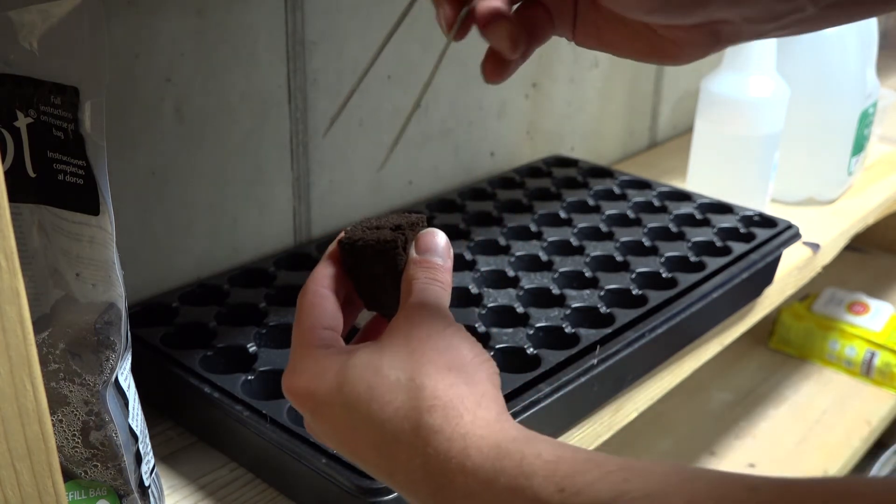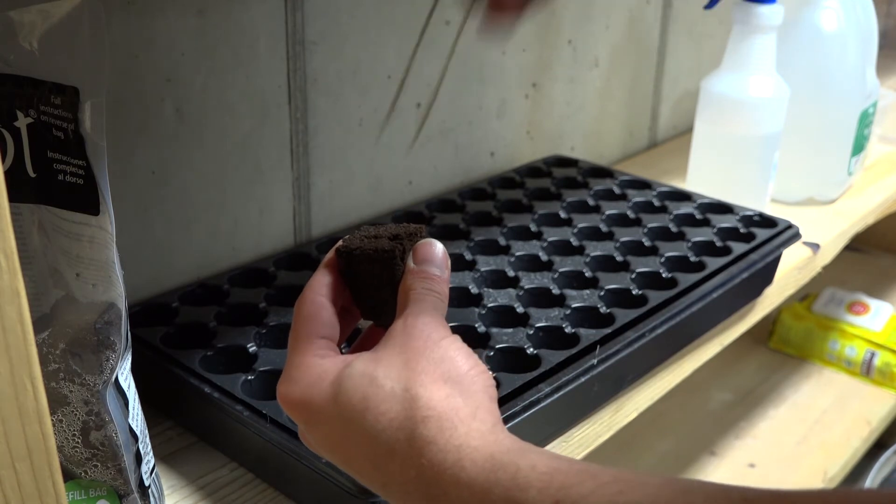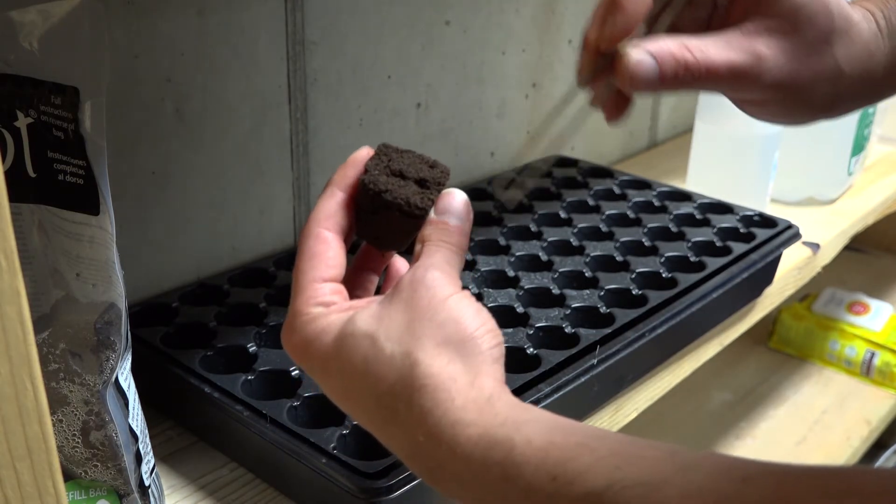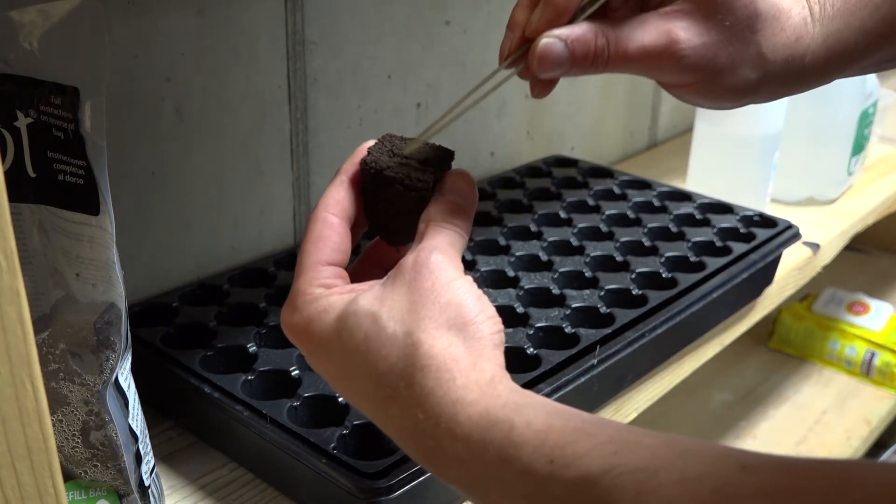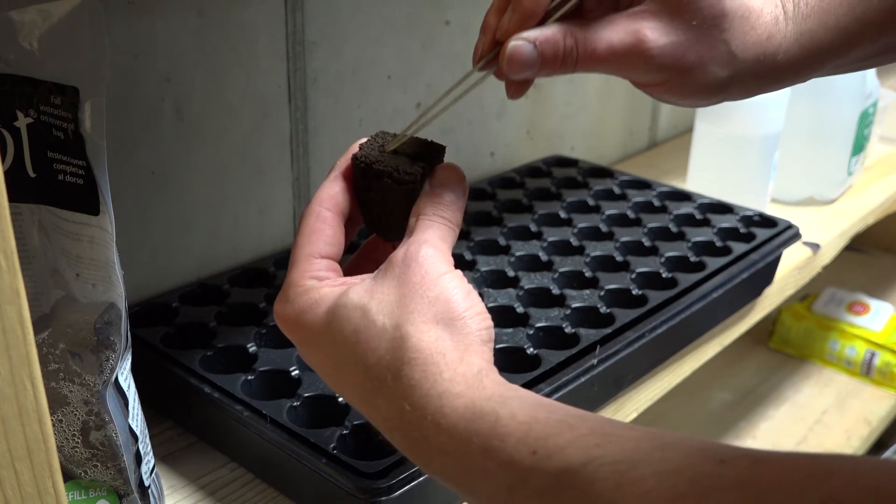When you pull the tweezers out, it's best to spread them further apart so it doesn't snag on the seed itself. All right, just kind of cover it up a little bit.